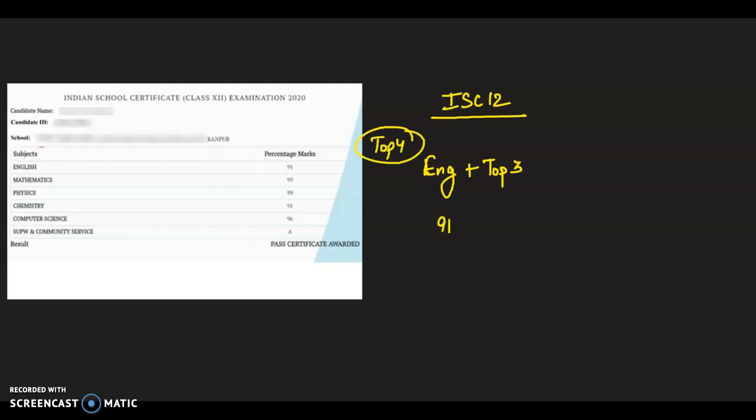In this case, English 91 marks. And then 99 in mathematics, 99 in physics, and computer science is 96. You'll have to divide it by 4. So, it is 96.25 percentage.